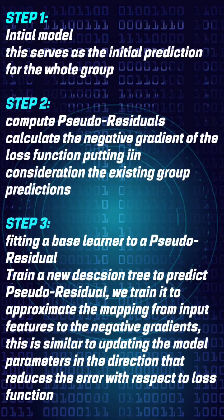Step 3: Fitting a base learner to a pseudo-residual. Train a new decision tree to predict pseudo-residual. We train it to approximate the mapping from input features to the negative gradients.